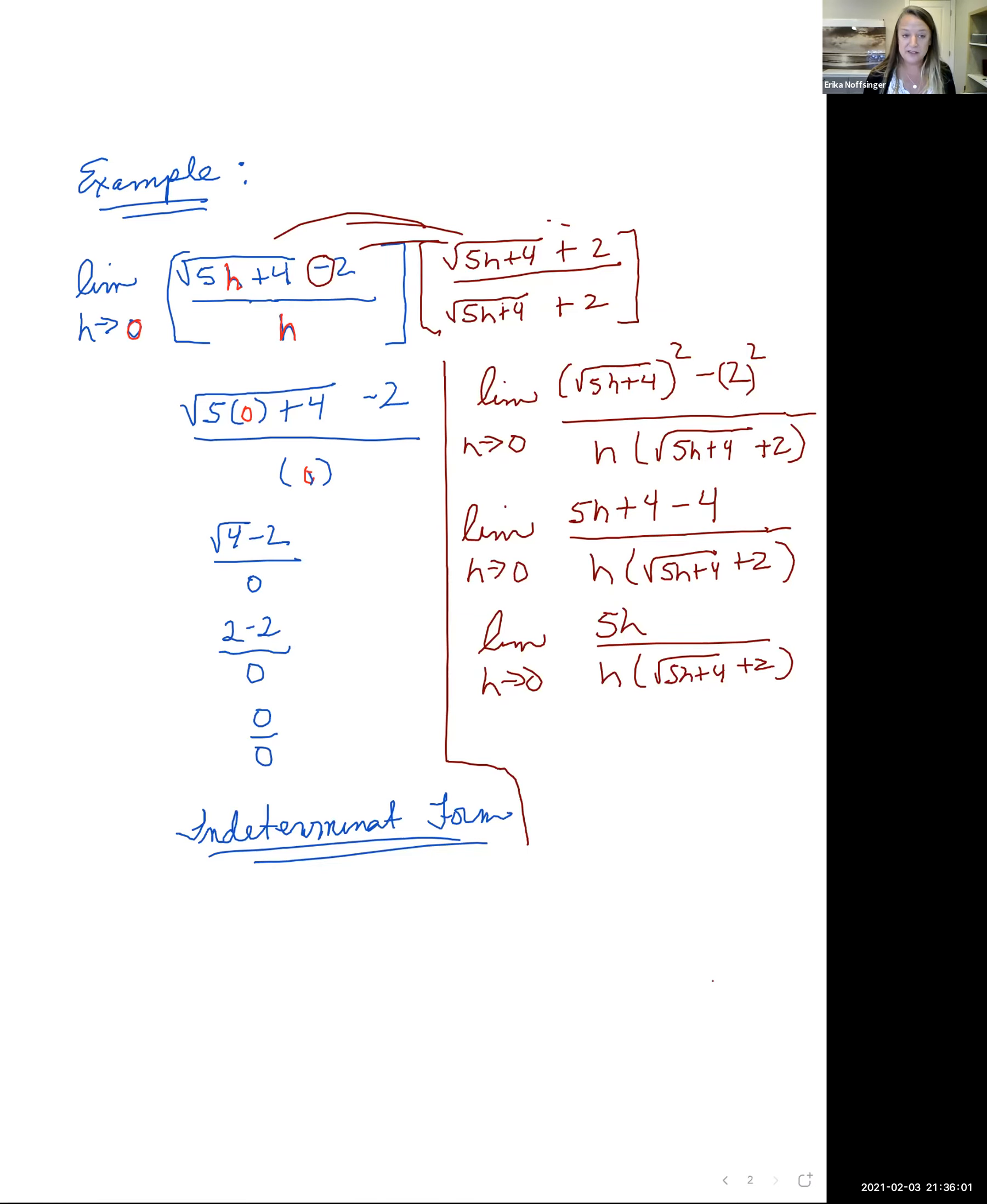Notice now that we have two factors in the numerator and denominator, or we have a factor in the numerator and denominator that are the same. So notice that we have an h, 5 times h is multiplication in between, we can cancel, same thing here.